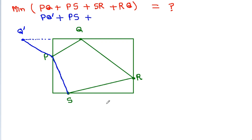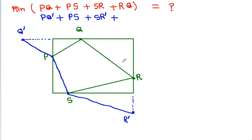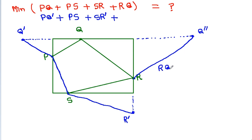And if we take the mirror image of R — call it R dash — and join SR dash, then RQ will be equal to SR dash. And if we take the mirror image of Q — call it Q double dash — and join RQ double dash, then RQ will be equal to RQ double dash.